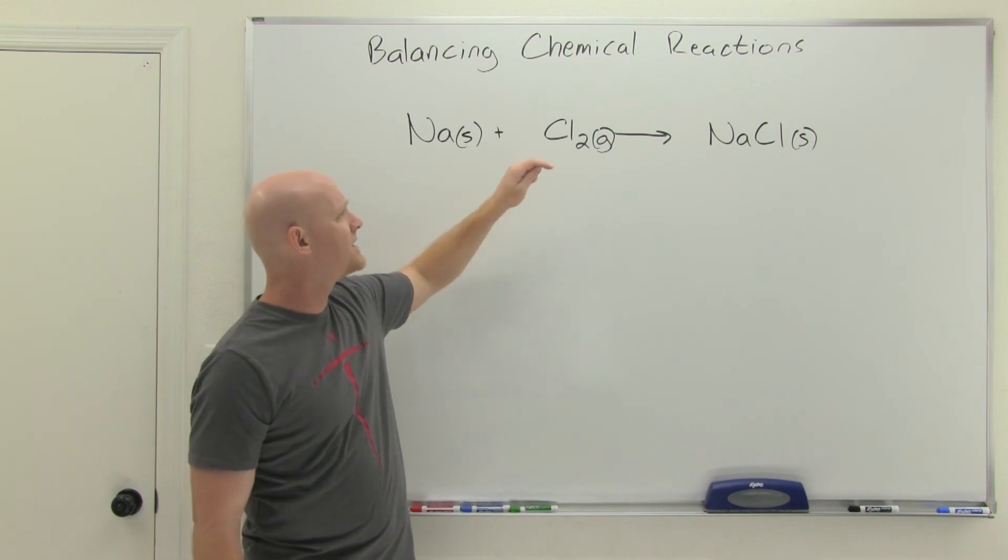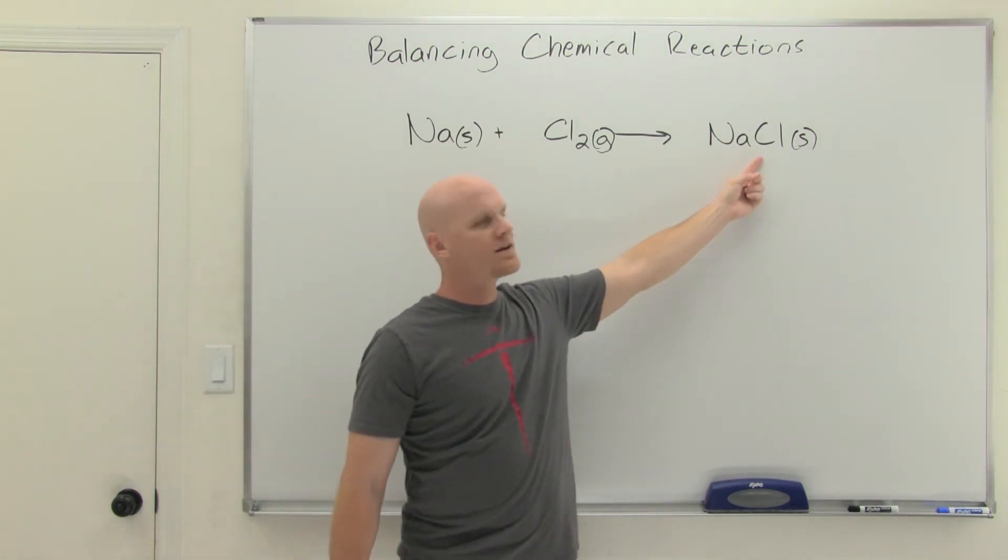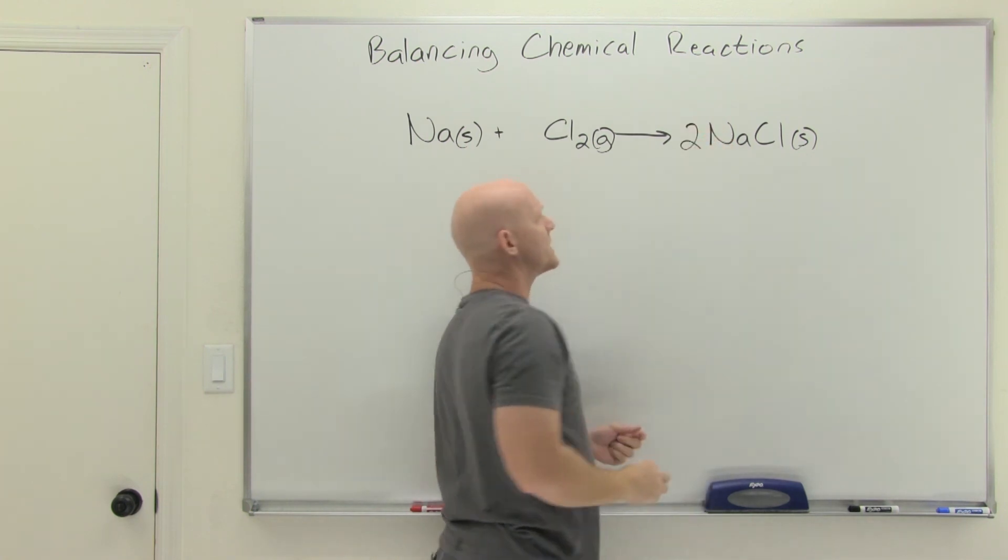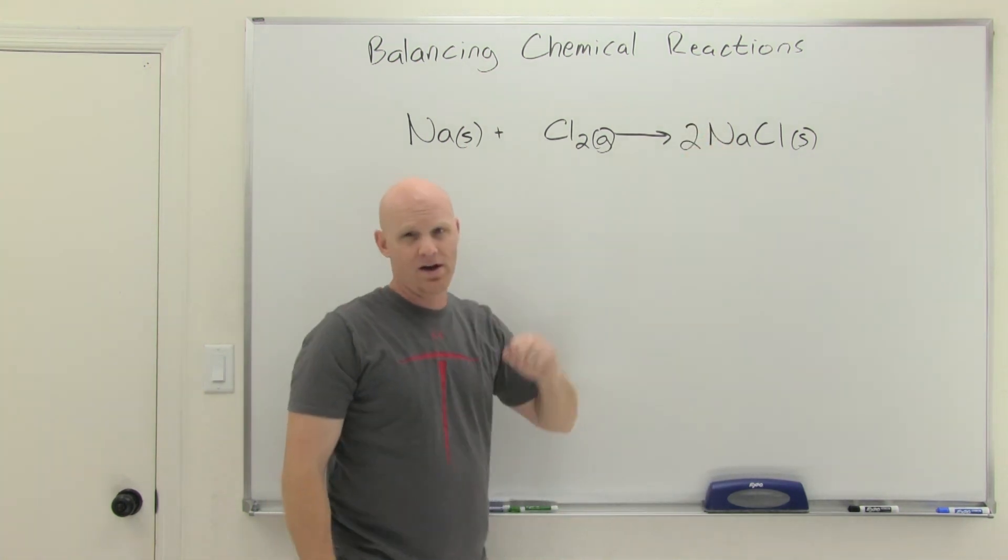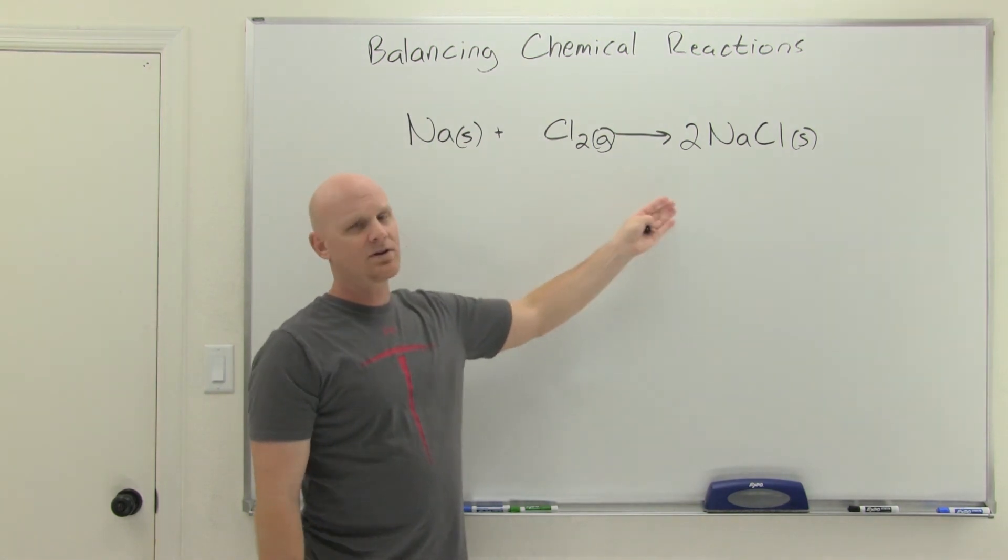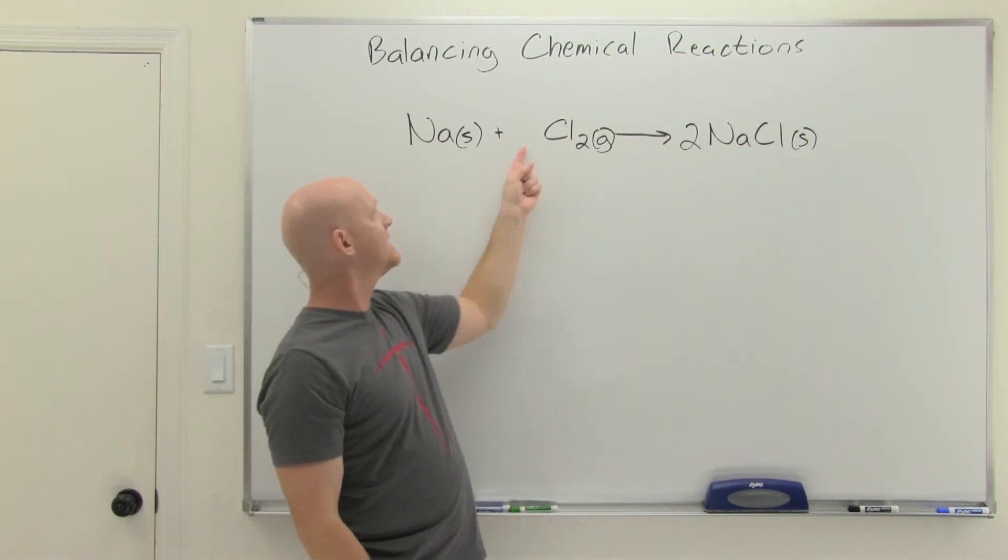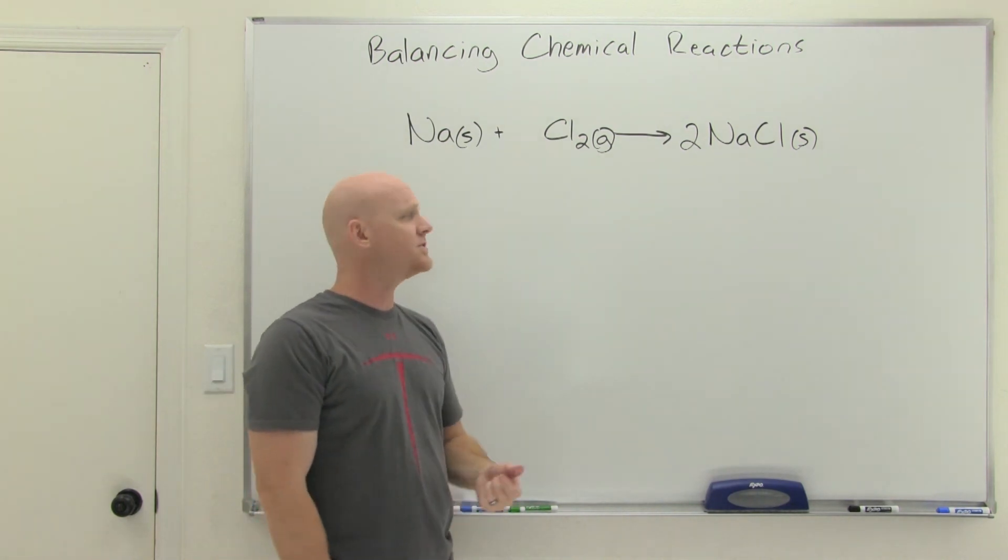But we move on to chlorine, and on the reactant side, we've got two chlorine atoms. On the product side, we've only got one. And so, to make sure that we have the same number, we're going to have to put a coefficient here. Once you've got all your chemical species in reaction, you're just adding coefficients in front of potentially some or all of your different chemical species.